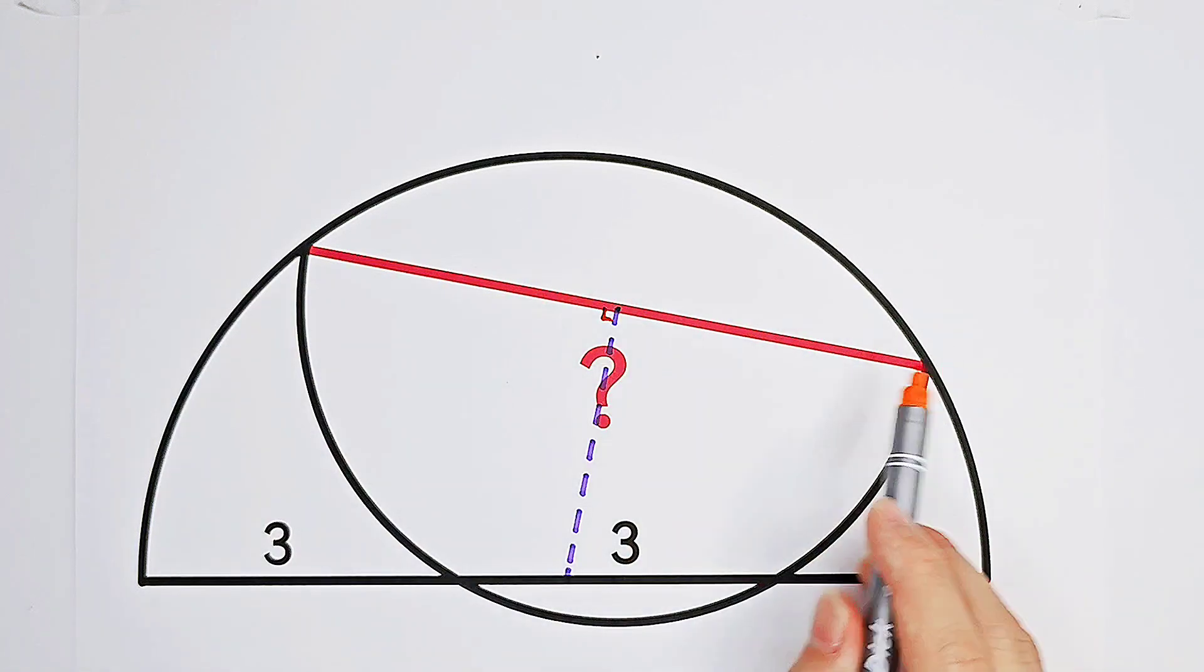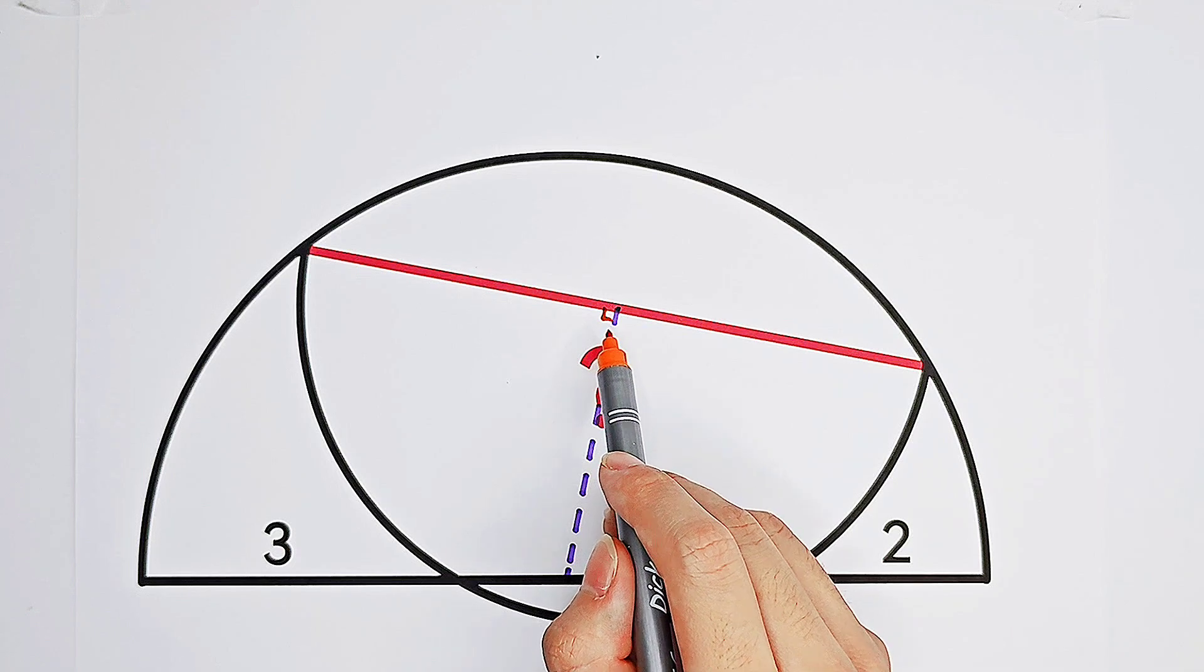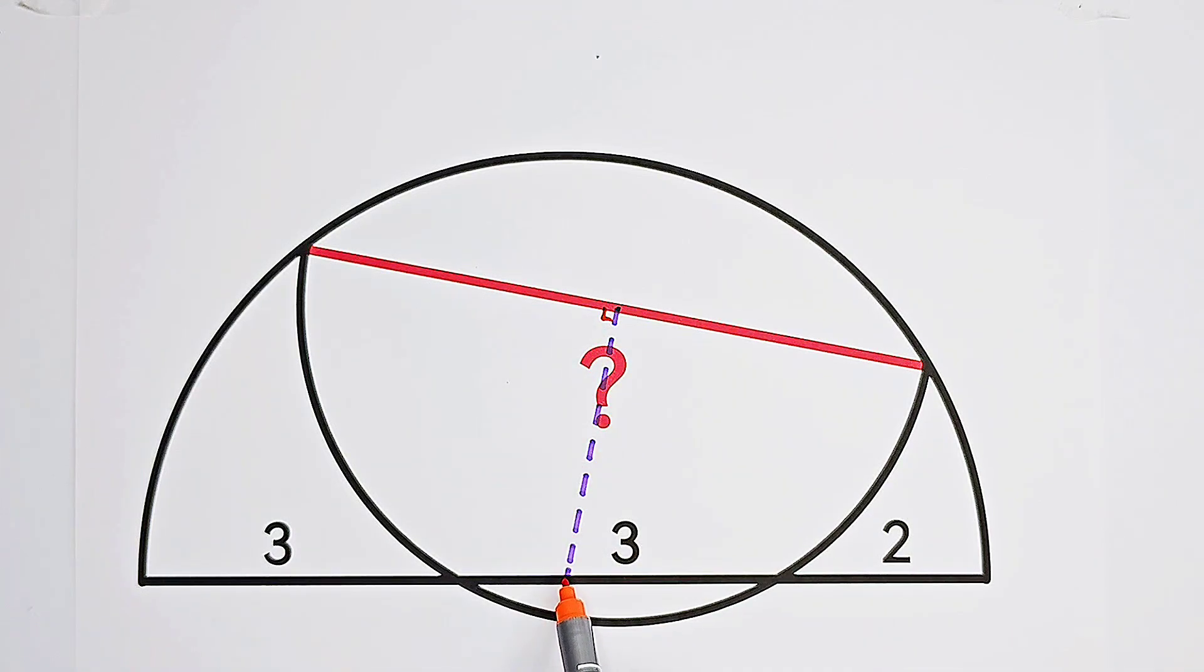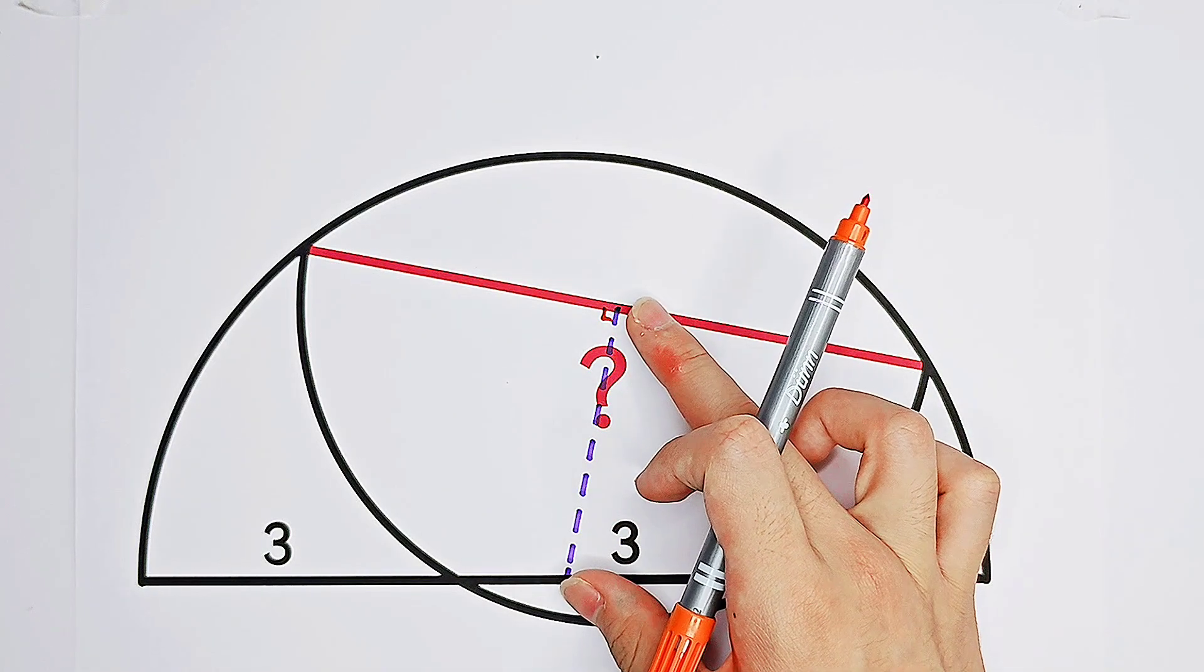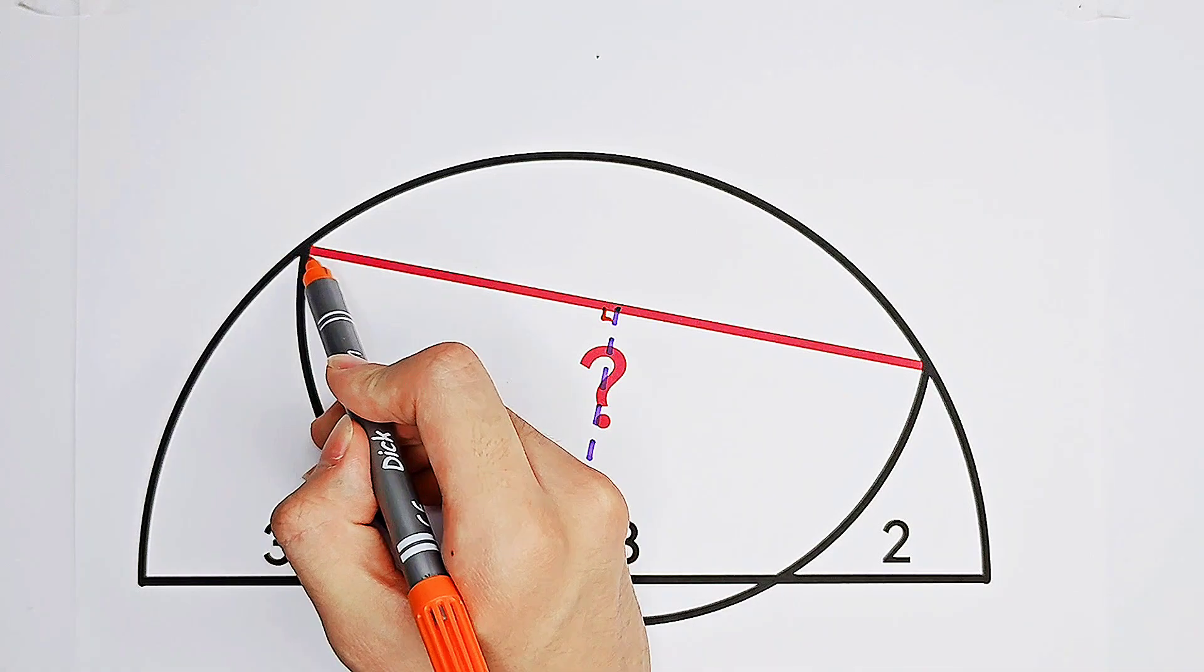So the angle between the chord and the connection of the center to the midpoint is always 90 degrees. So now it's a right angle. What shall I do next? Of course, we don't know how long this purple line segment measures.